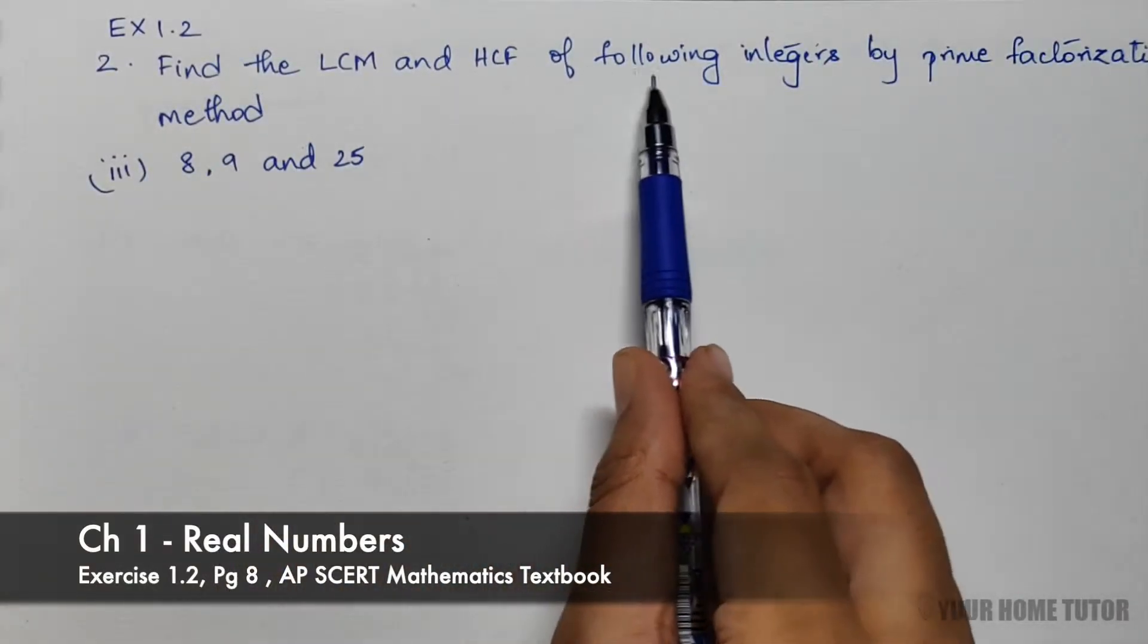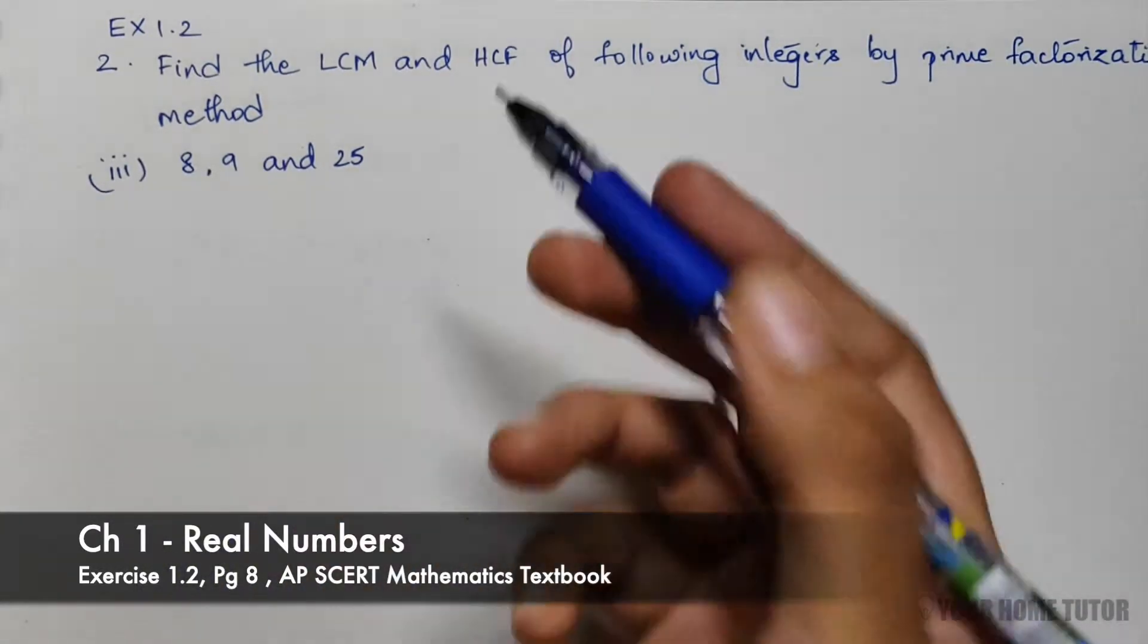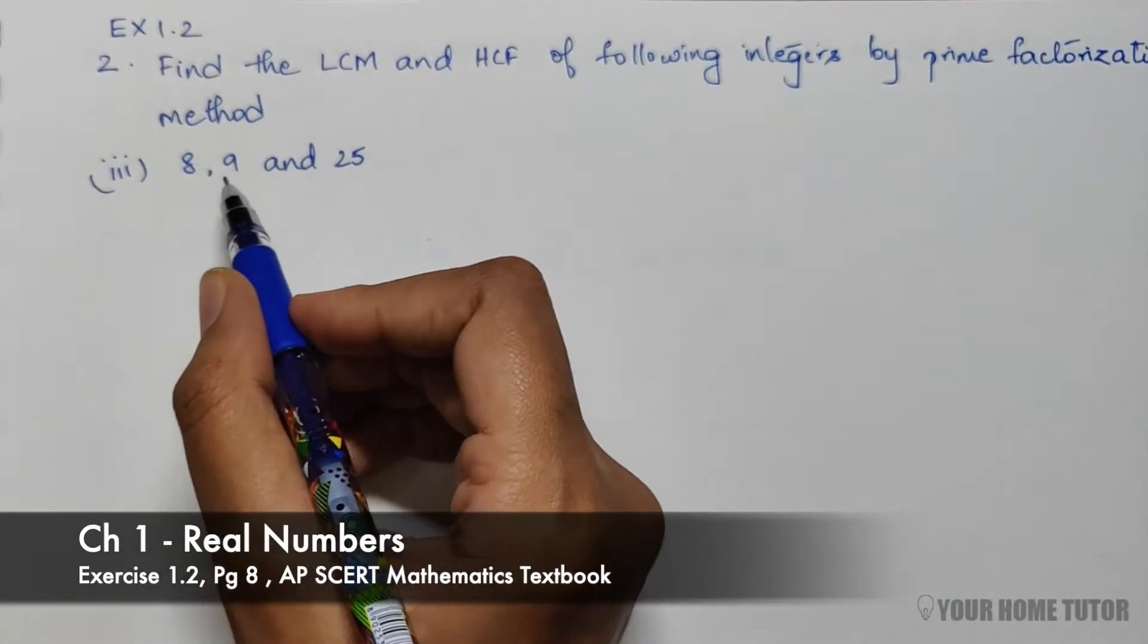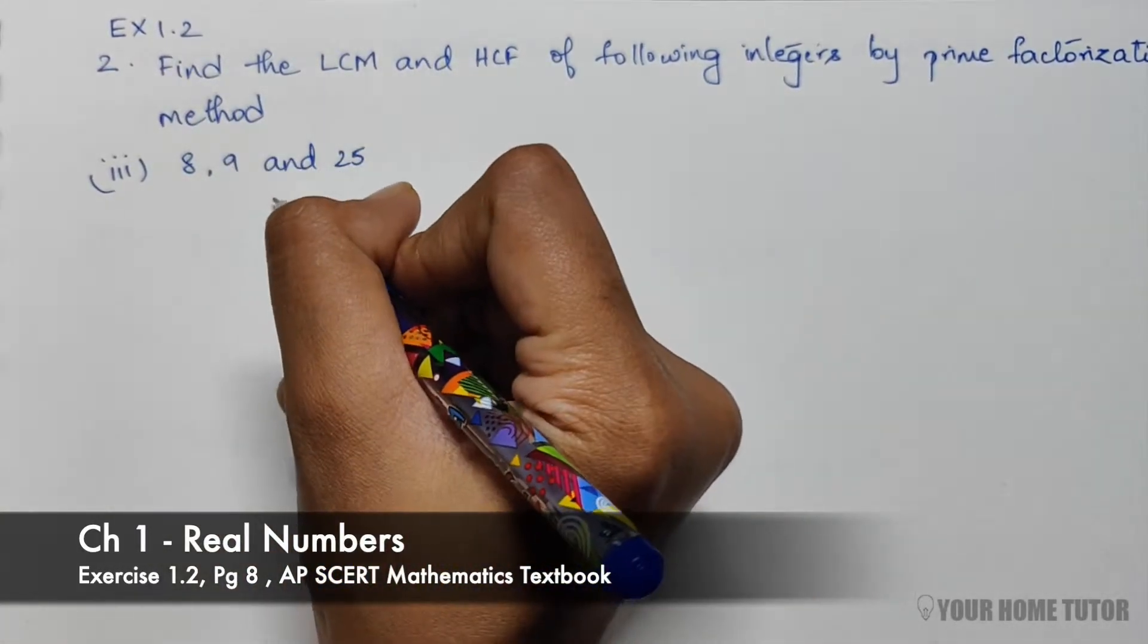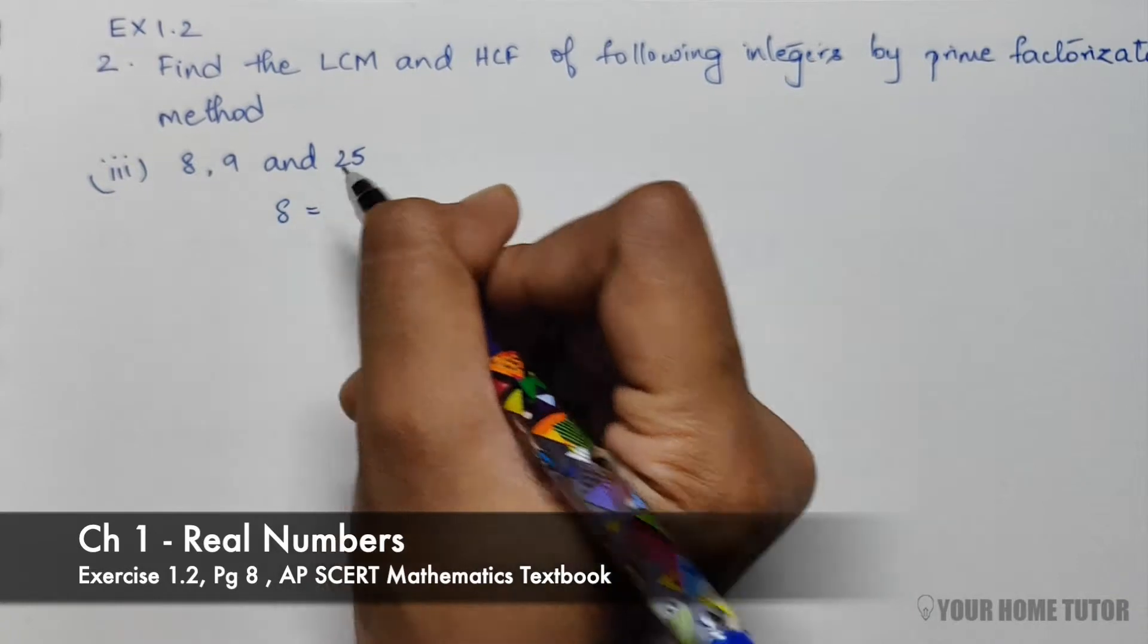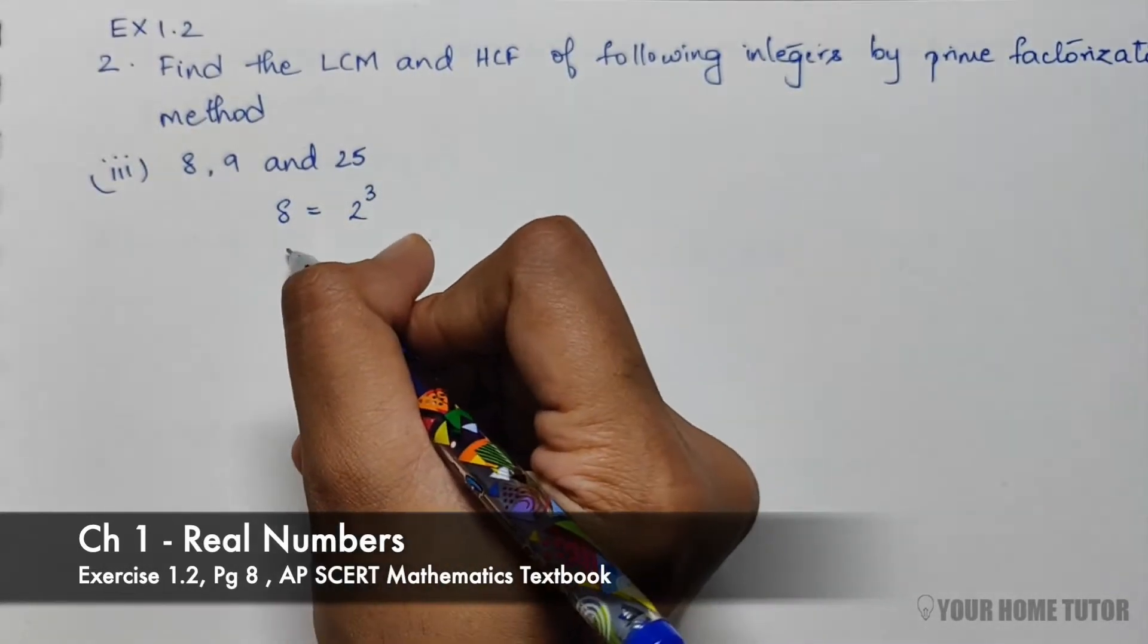Find the LCM and HCF of the following integers by prime factorization method. We have the numbers 8, 9, and 25. To write the prime factors of these numbers: 8 is 2 cubed, or 2³ × 3⁰ × 5⁰. For 9, it can